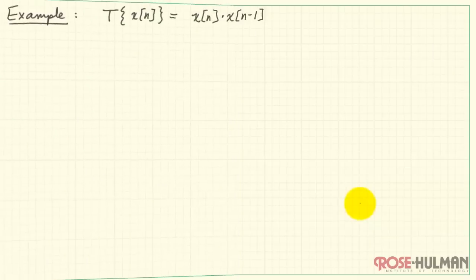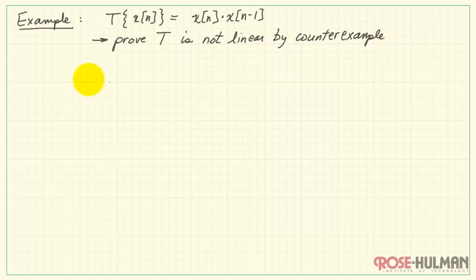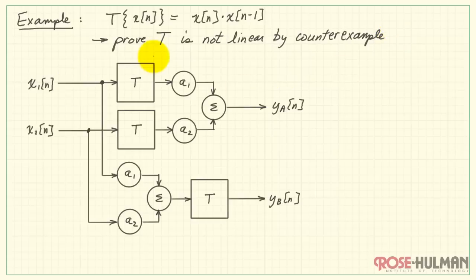Now I'd like to show you another way of establishing whether or not the system is linear. We can use the technique of trying to prove that T is not linear by use of a counterexample. That is, if we can find one specific example, such as x1 equals unit impulse, x2 is a unit impulse, if we can find just one example where the linearity does not hold, then we know the system is not linear.